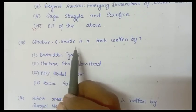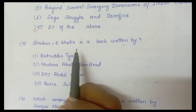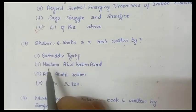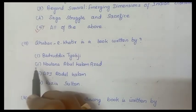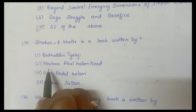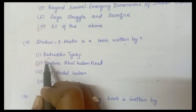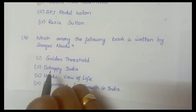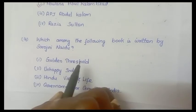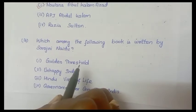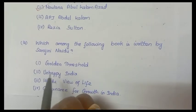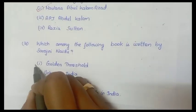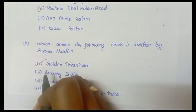Next question: Ghubar-e-Khatir is a book written by whom? Answer is Maulana Abul Kalam Azad. Next question: Which among the following books is written by Sarojini Naidu? Answer is The Golden Threshold.